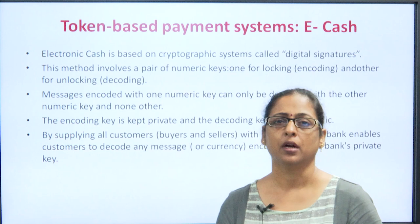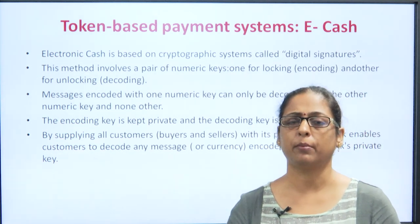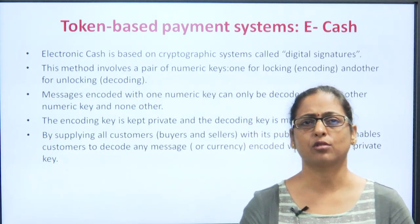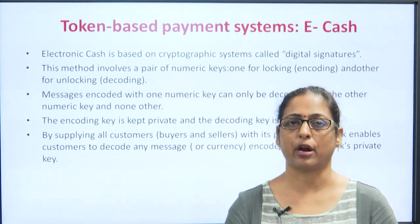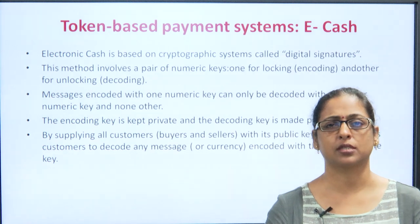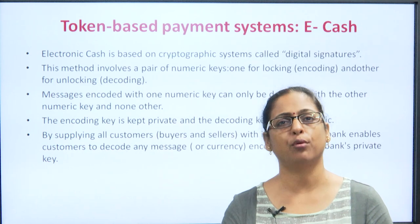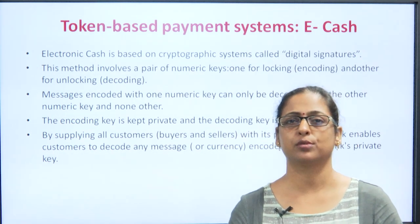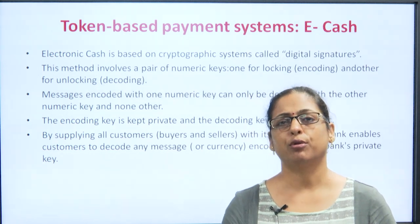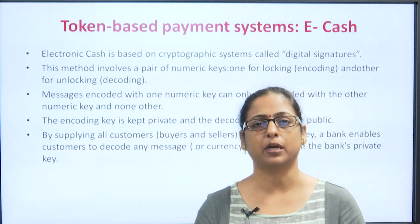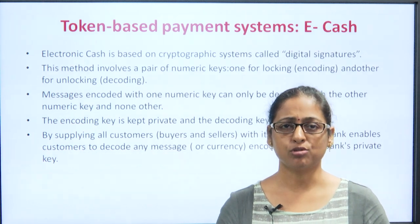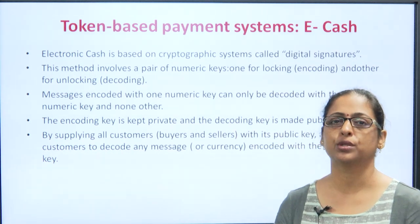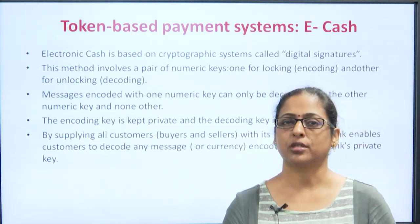Let us talk about the token-based payment system. The first token-based payment system is eCash. This is a complete replica of the physical cash. It is just like the physical cash that you are carrying and it is based on the cryptographic system and requires digital signatures also. The cryptographic system basically is a kind of system which allows data to be shared to only a few people and not to be public. So once this electronic cash payment system is being used between the customer and the vendor, only two or three parties would be knowing about this particular transaction and it would be completely encrypted and nobody else would be able to know.